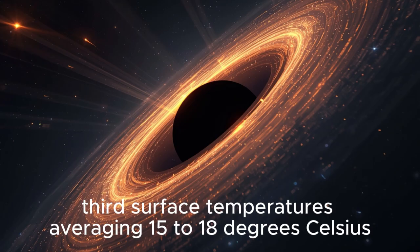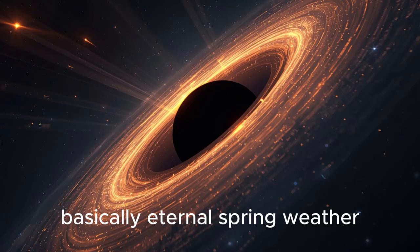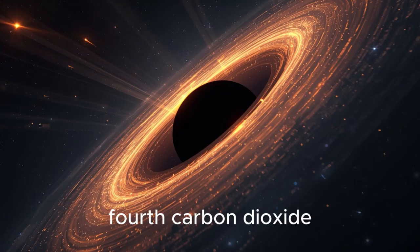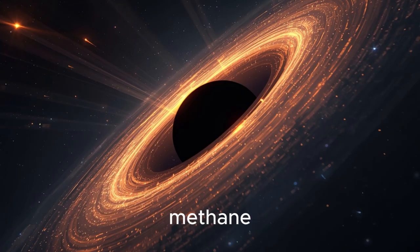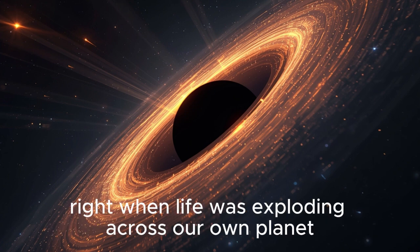Third, surface temperatures averaging 15 to 18 degrees Celsius in the habitable twilight belt, basically eternal spring weather. Fourth, carbon dioxide, methane, and other gases at levels that mirror Earth 3 to 4 billion years ago, right when life was exploding across our own planet.